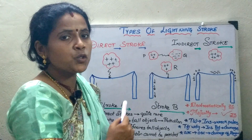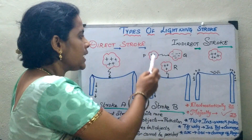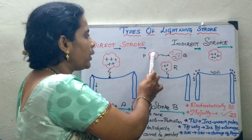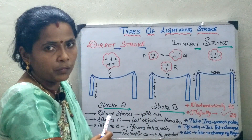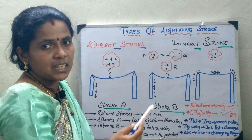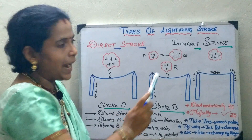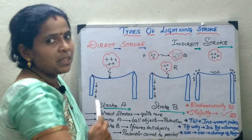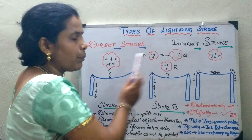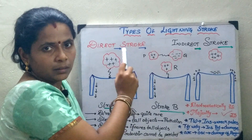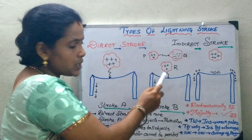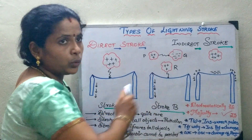Now we will move on to stroke B. In this case, three different clouds are considered. If the potential difference between these clouds exceeds the breakdown potential of the air, two clouds get discharged, ionize each other, and disappear. As a result, only the remaining free positively charged cloud appears in the atmosphere, inducing a negative charge, and the charges get drained to the ground.